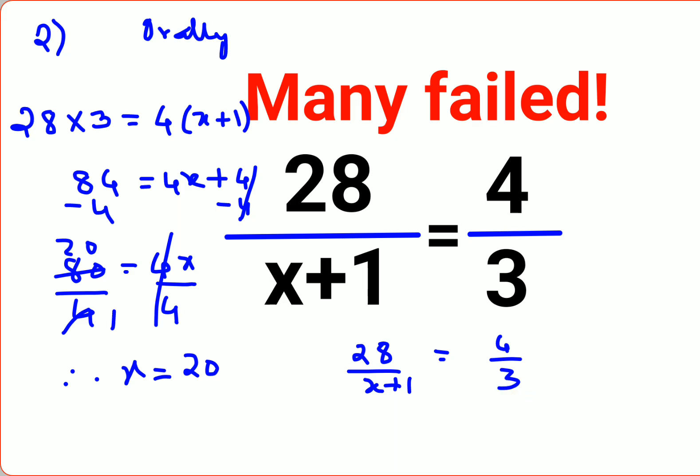So your question was what? 28 upon x plus 1 is equals to 4 upon 3. Your first step would have been, see, whenever you have the same numbers on the either side or rather multiples on either side of the equal to in your numerator, you can directly cancel this. So this is 1s are and 7s are.